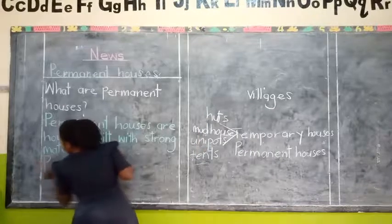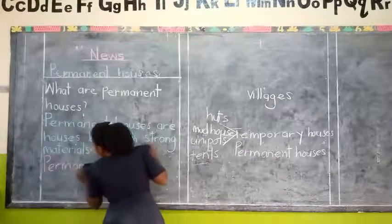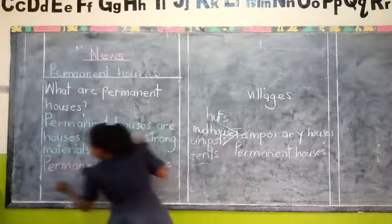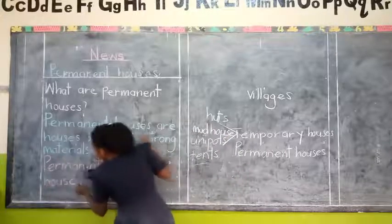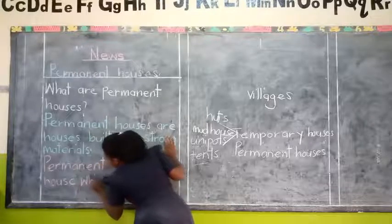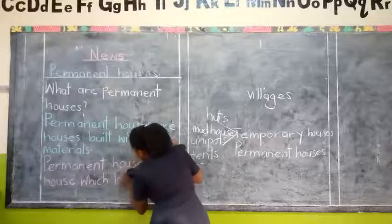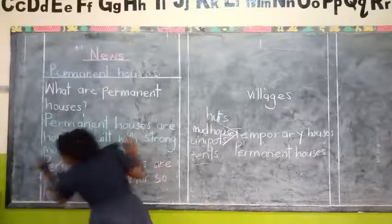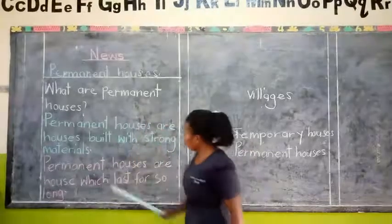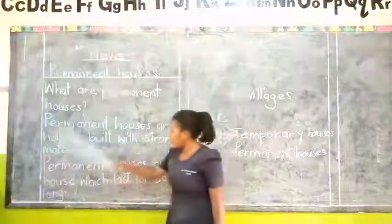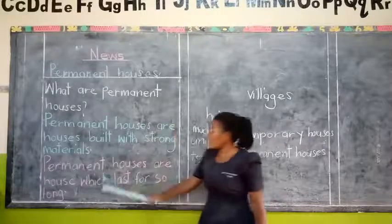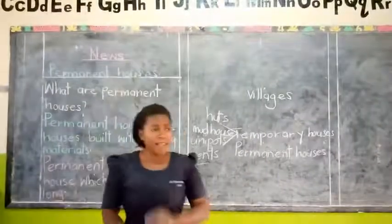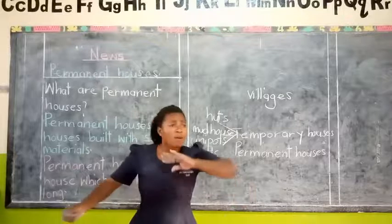So that is another answer: permanent houses are houses which last for so long. Let us read with the teacher: permanent houses are houses which last for so long. It means this type of house can be there for a hundred years, for many years.